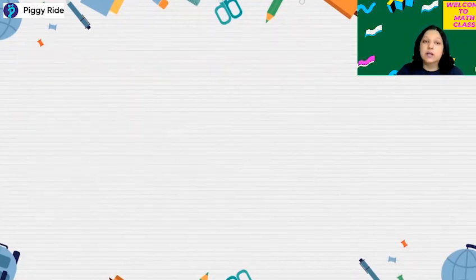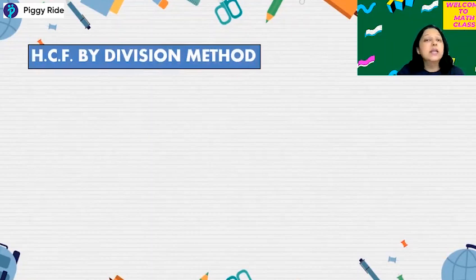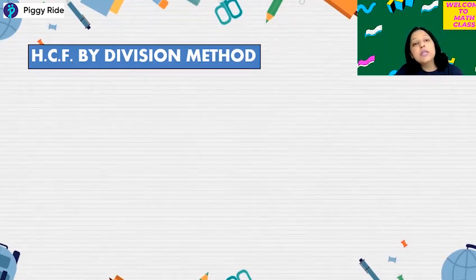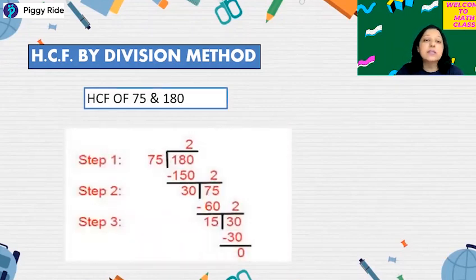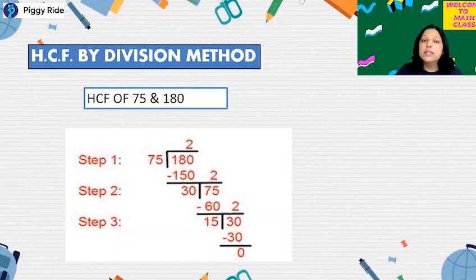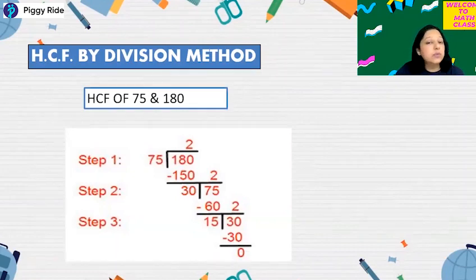The third method is HCF by division method. Division method is of two types: long division and short division. Let's see first: HCF of 75 and 180 by using long division. Long division means you divide the bigger number by the smaller number. Whatever remainder comes, you take it as the next divisor and continue. When the final remainder is 0, that final divisor will be your HCF.